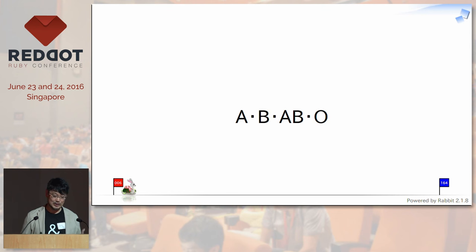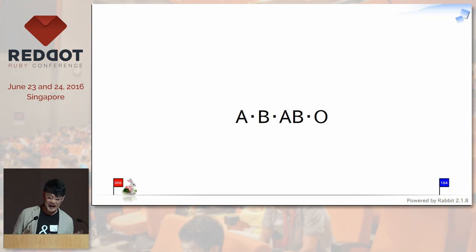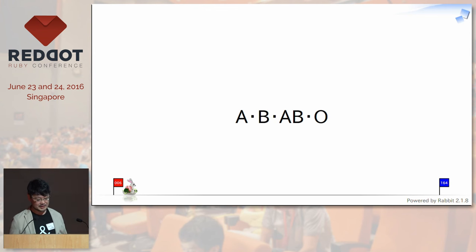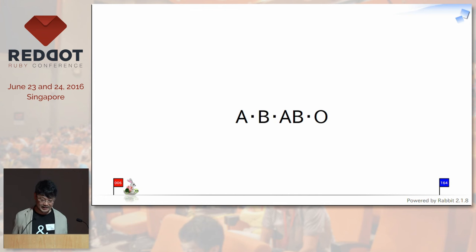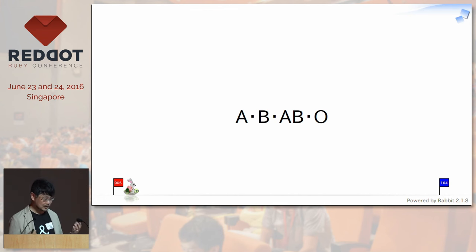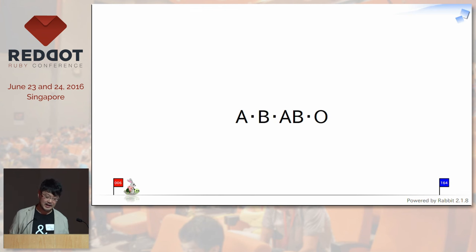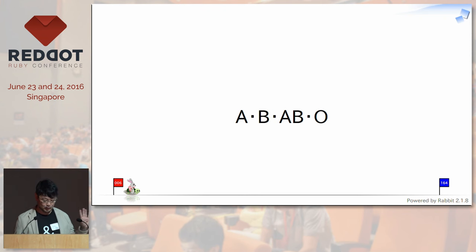Blood type A — people with blood type A have factor A. People with blood type B have factor B. Blood type AB has both factor A and factor B. Blood type O does not have either factor A or factor B. So all of humankind is classified into these four categories, four blood types.